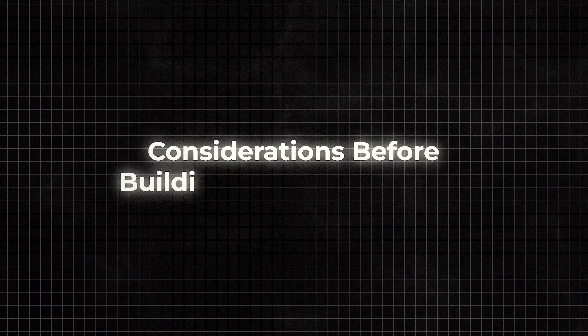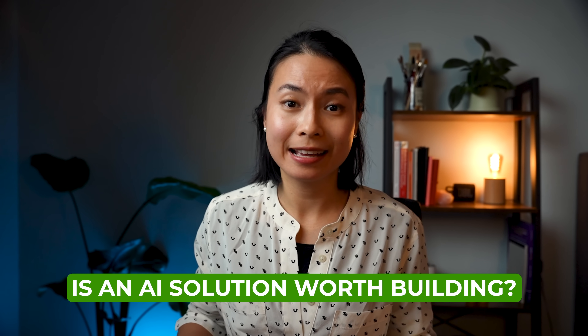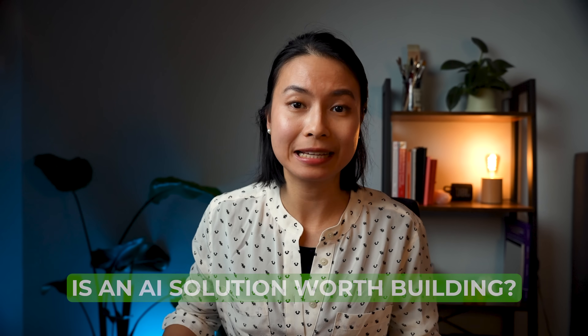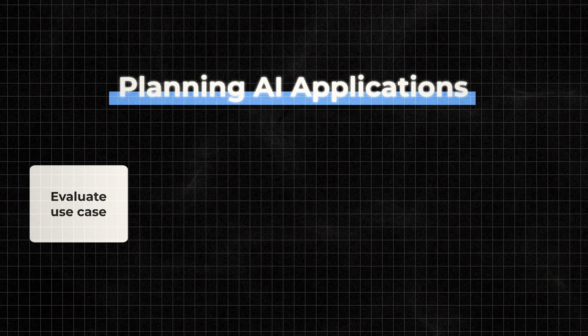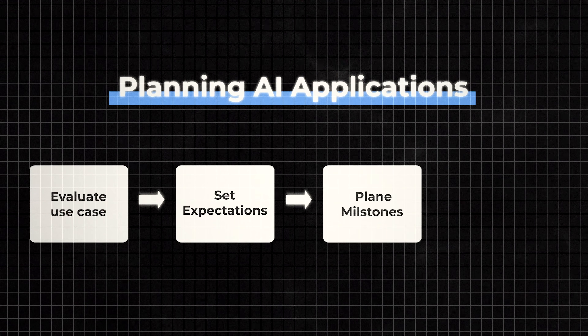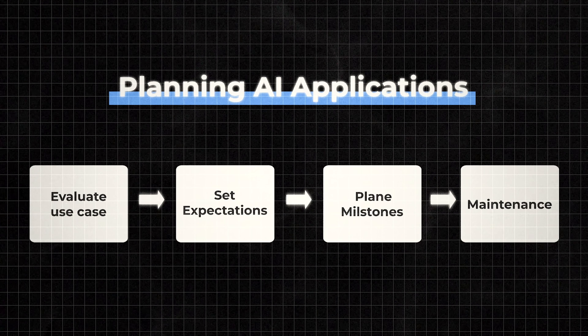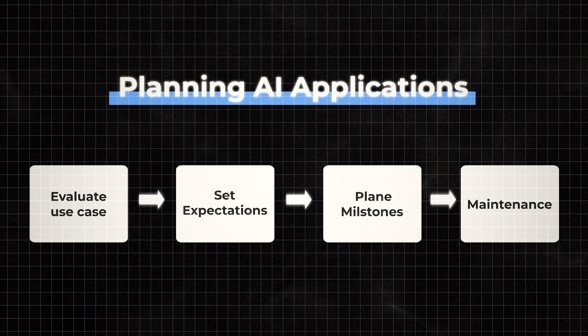One of the most valuable sections of the book is the discussion on considerations before even building an AI application — for example, deciding whether an AI solution is worth building in the first place. Sometimes a simple regression model can get the job done and there's no need to insist on using LLMs. Unfortunately, fear of missing out often drives companies to implement AI even when it's unnecessary. You also need to set expectations, plan milestones, and plan for maintenance. From my experience, these discussions are often overlooked in AI development.